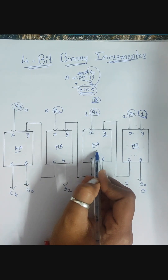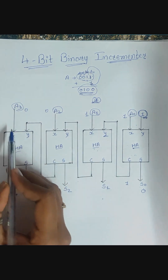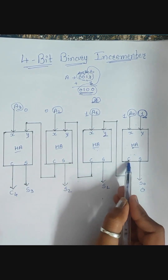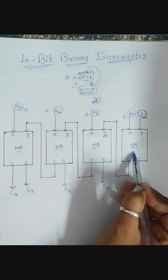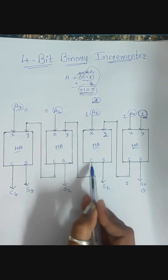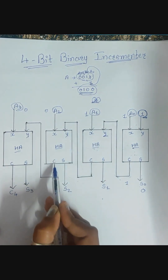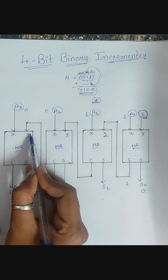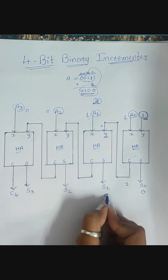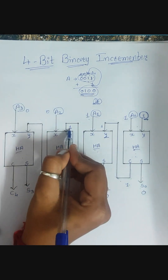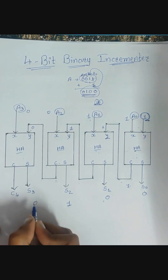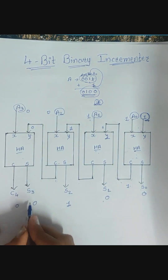One input is A — that's A0, A1, A2, and A3 — and the second input is the carry output of the previous half adder. So this carry output is given as input to the next stage, and that carry output is given as carry input to the next, and so on. For example: one plus one gives zero with carry one; one plus zero gives one with carry zero; zero plus zero gives zero with carry zero.